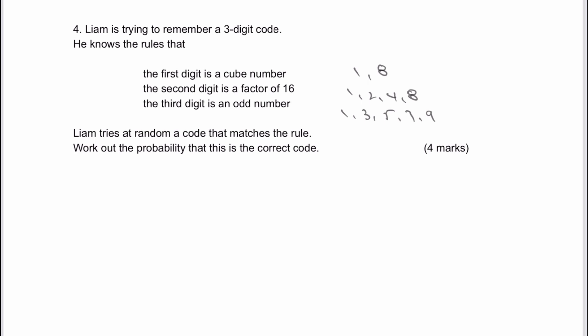And then it says, Liam tries at random a code that matches the rule. Work out the probability if this is a correct code. Well, the number of codes available is going to be two codes there, multiplied by four numbers there, multiplied by five numbers there. So that is the total number of variations that are available. So the number of codes is going to be equal to 40.